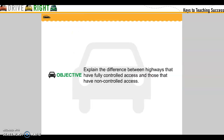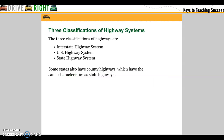Explain the difference between highways that are fully controlled access and those that have non-controlled access. Three classifications of the highway system are interstate highways, U.S. highway systems, and state highway systems. Some states also have county highways, which have the same characteristics as state highways.